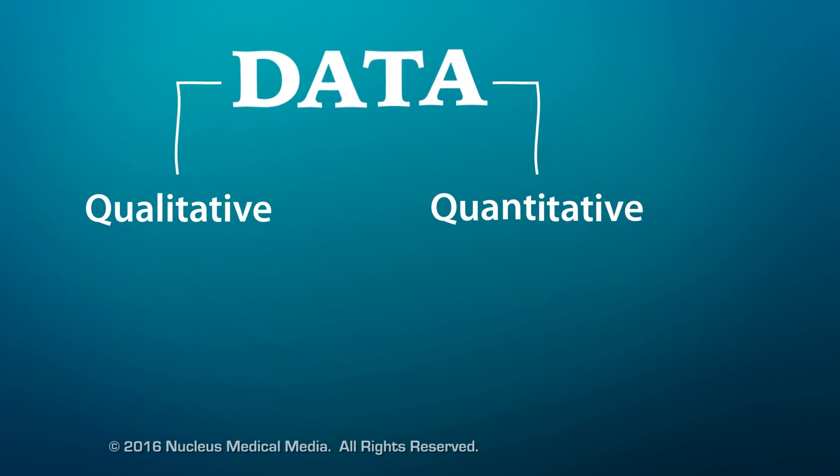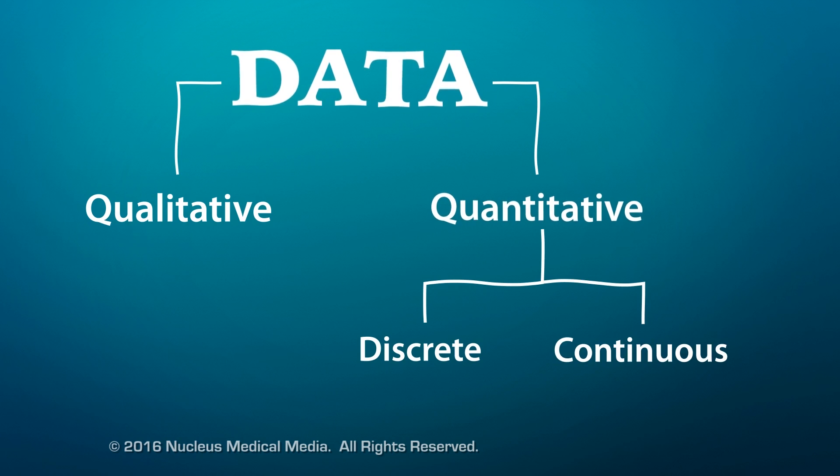Sometimes scientists will break down quantitative data into specific types called discrete data and continuous data.